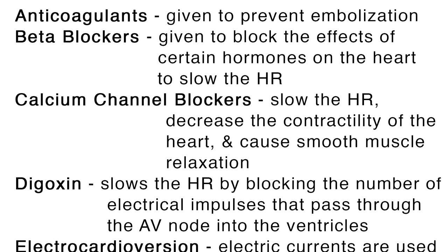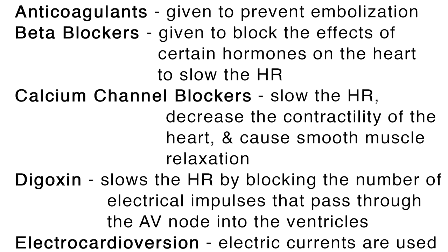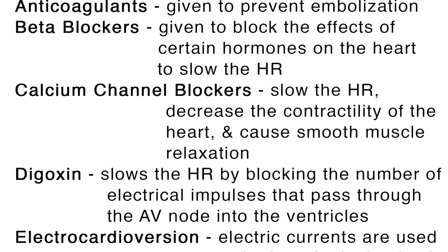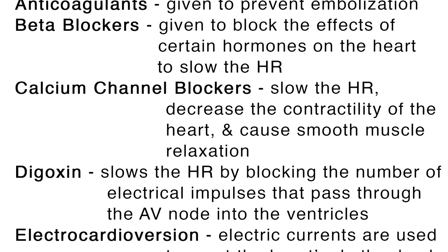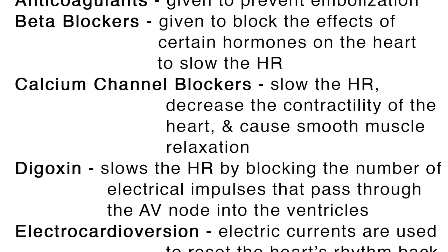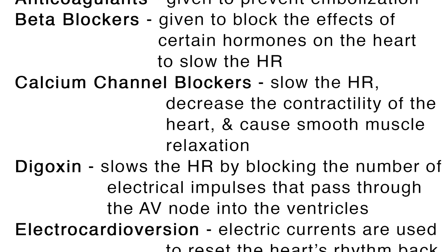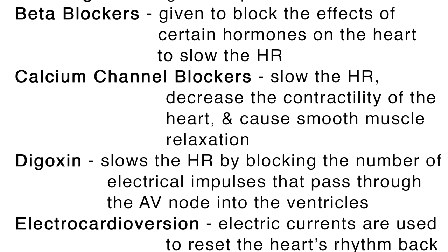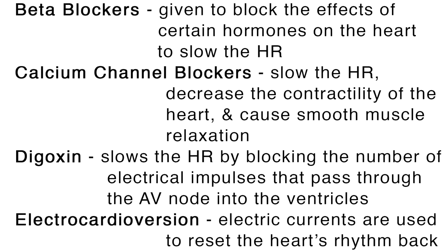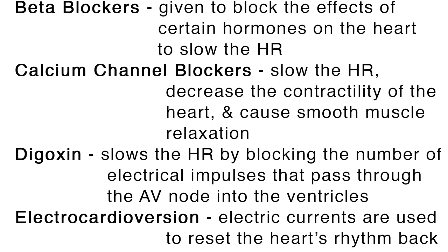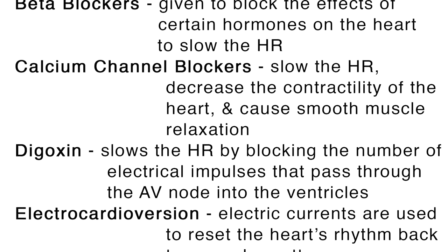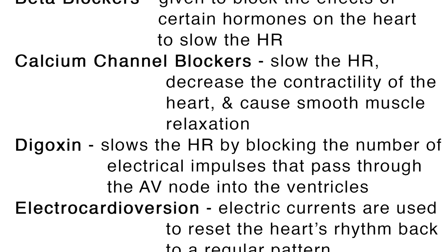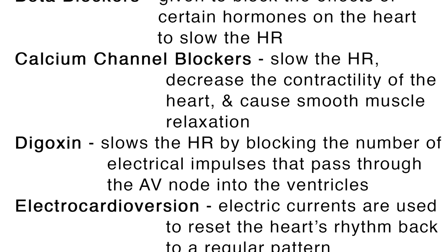A variety of medicines are available to restore normal heart rhythm. Anticoagulants are given to prevent embolization. Beta blockers are given to block the effects of certain hormones on the heart to slow the heart rate. Calcium channel blockers slow the heart rate, decrease the contractility of the heart, and cause smooth muscle relaxation. Digoxin slows the heart rate by blocking the number of electrical impulses that pass through the AV node into the ventricles.